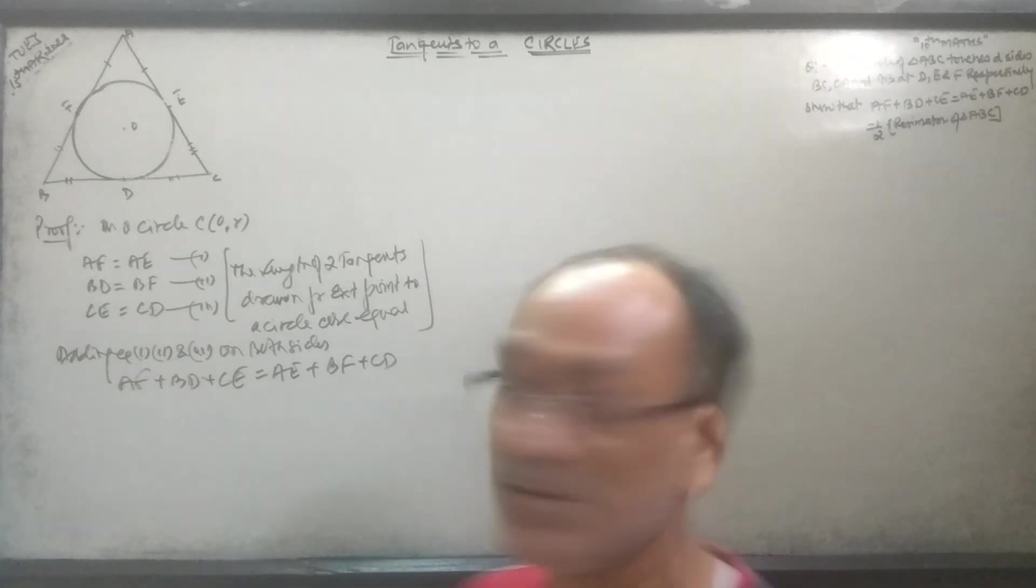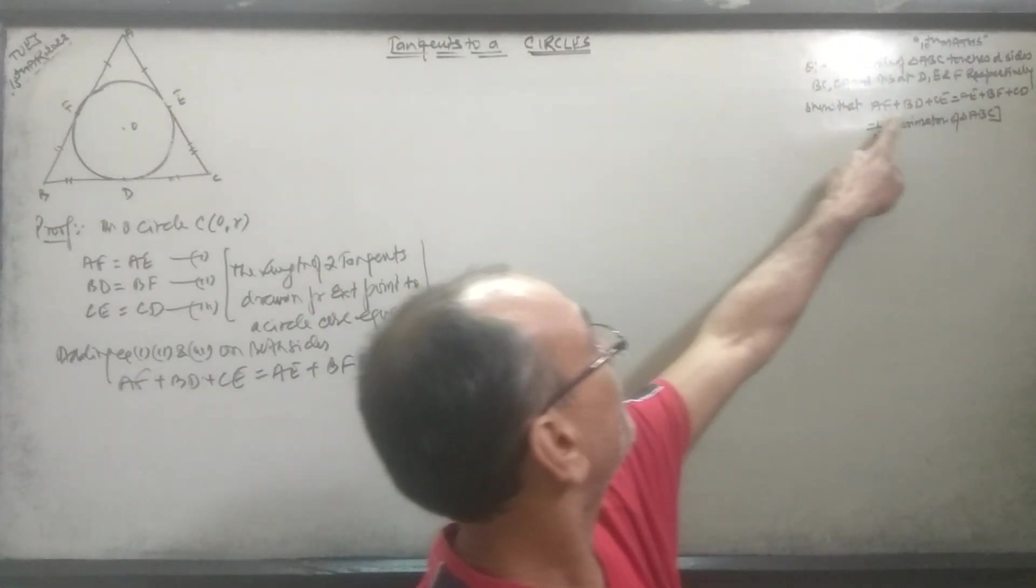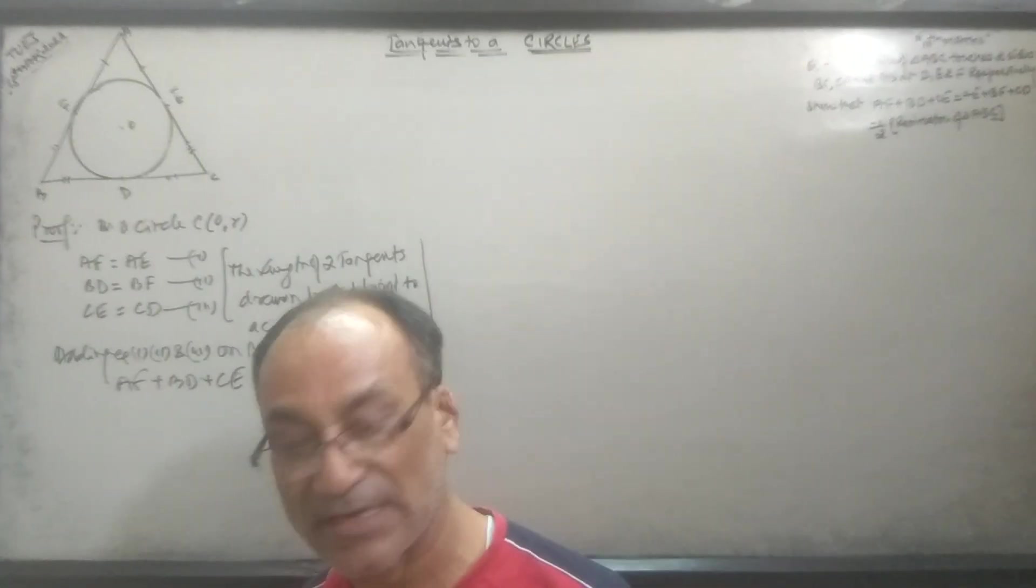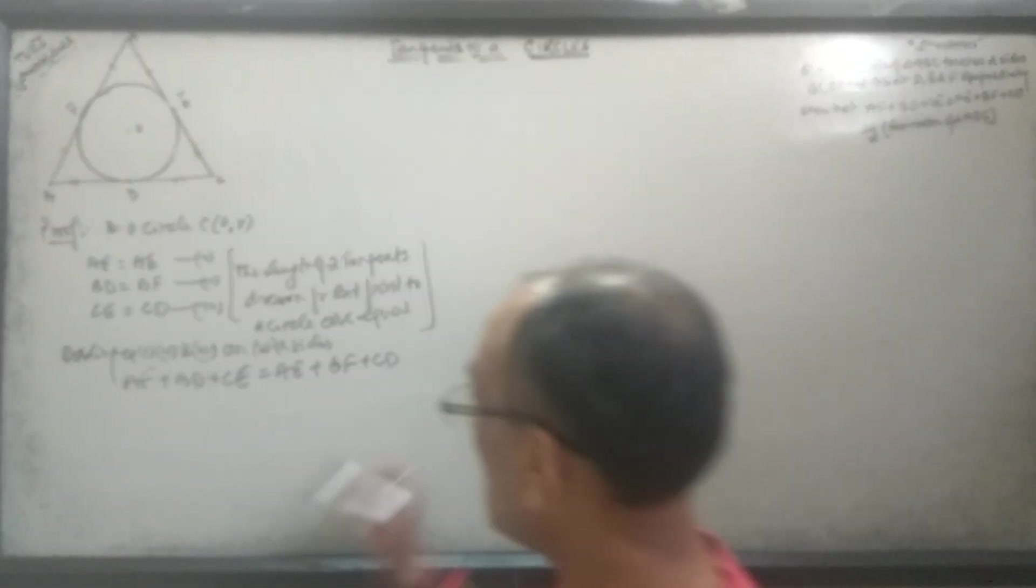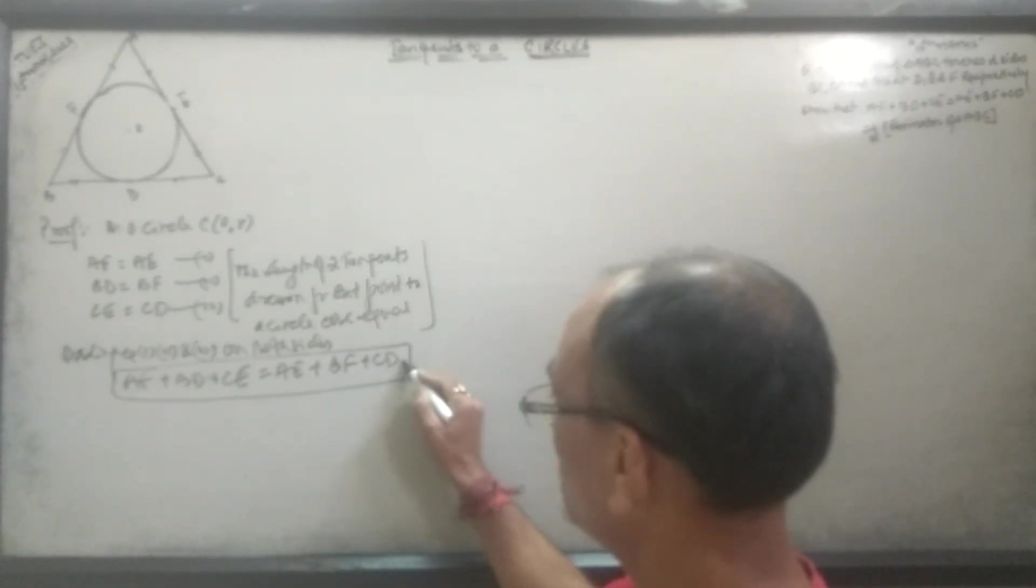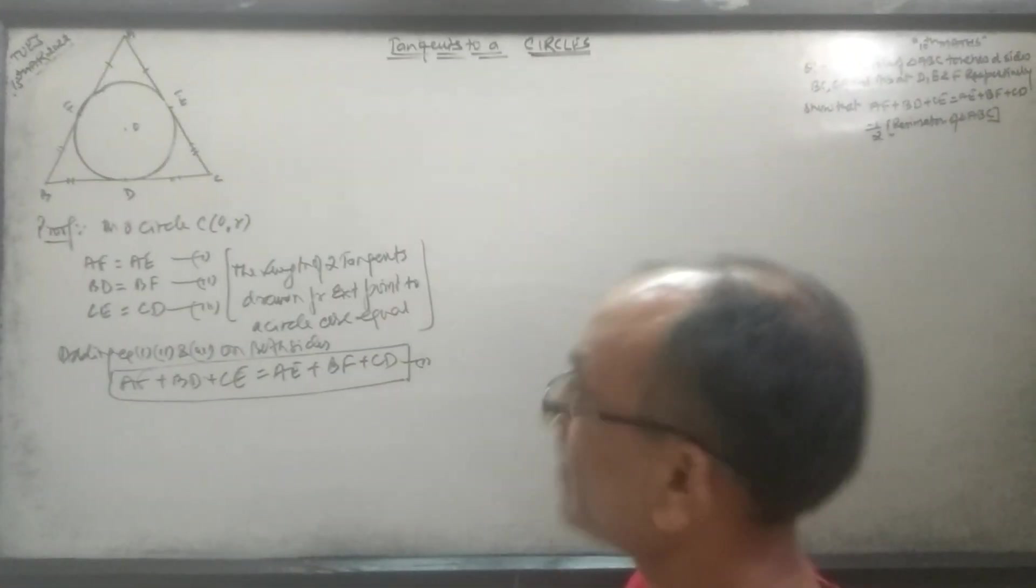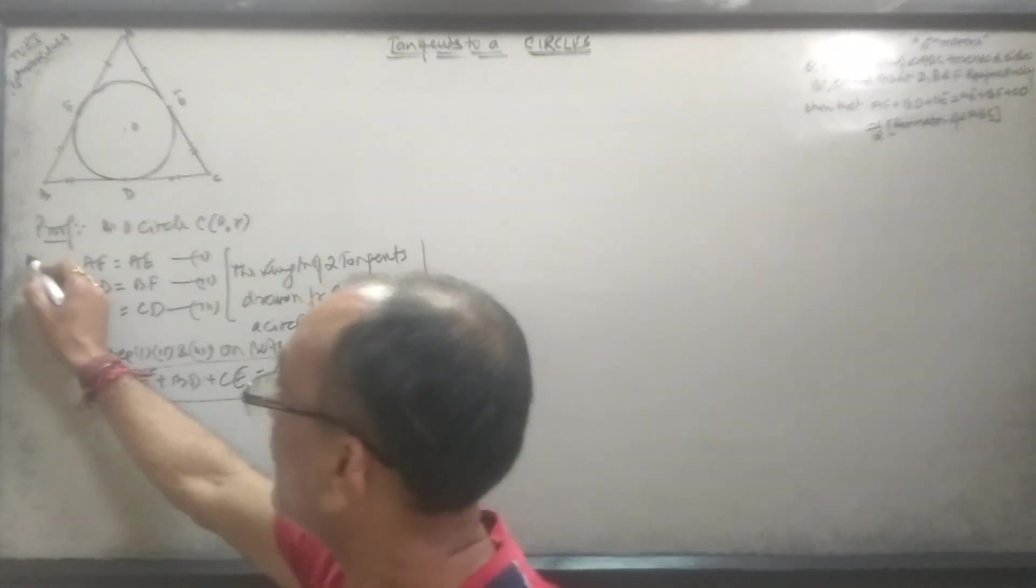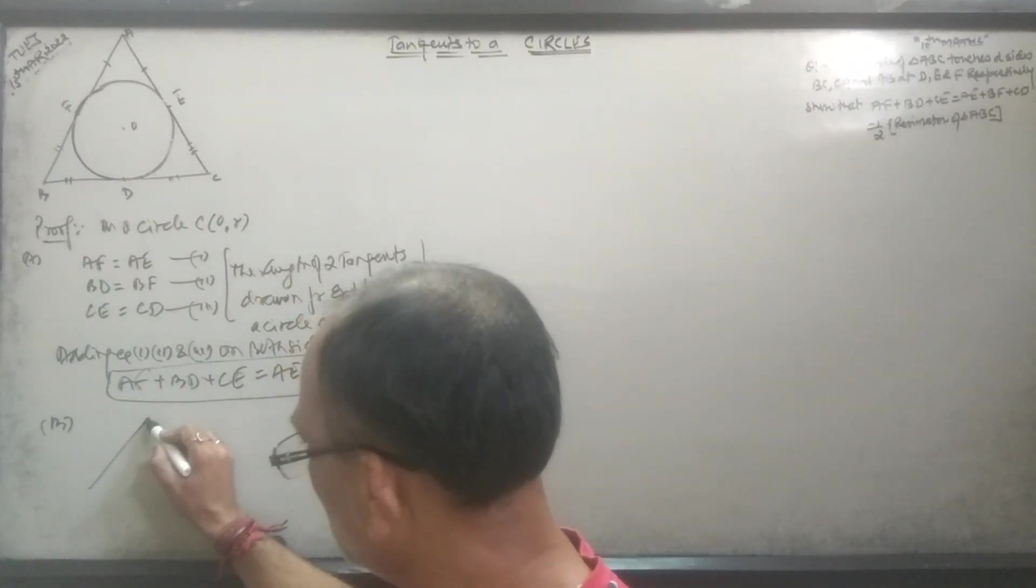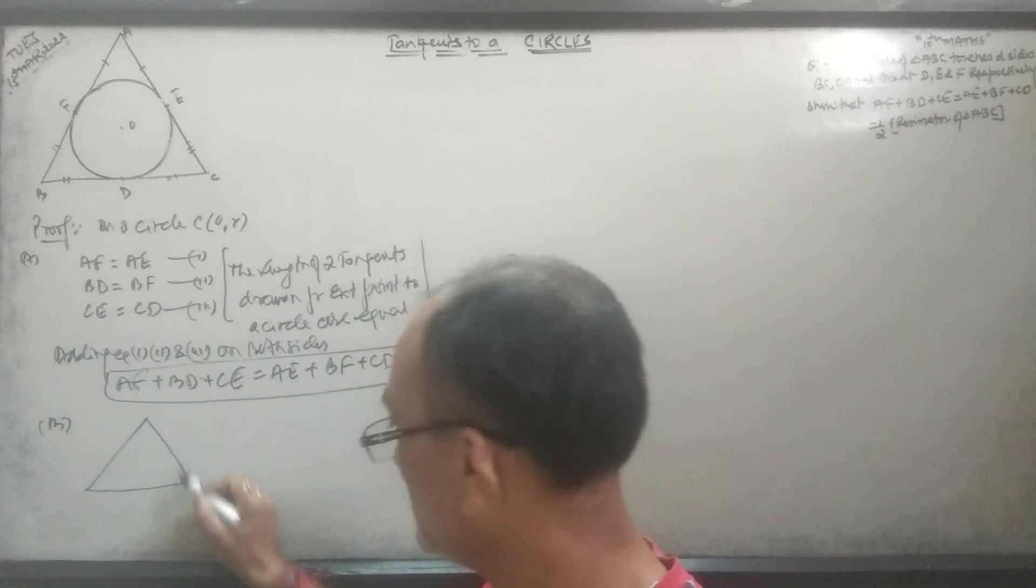This is the general first placement. Now in triangle ABC, the perimeter is AB plus BC plus CA.